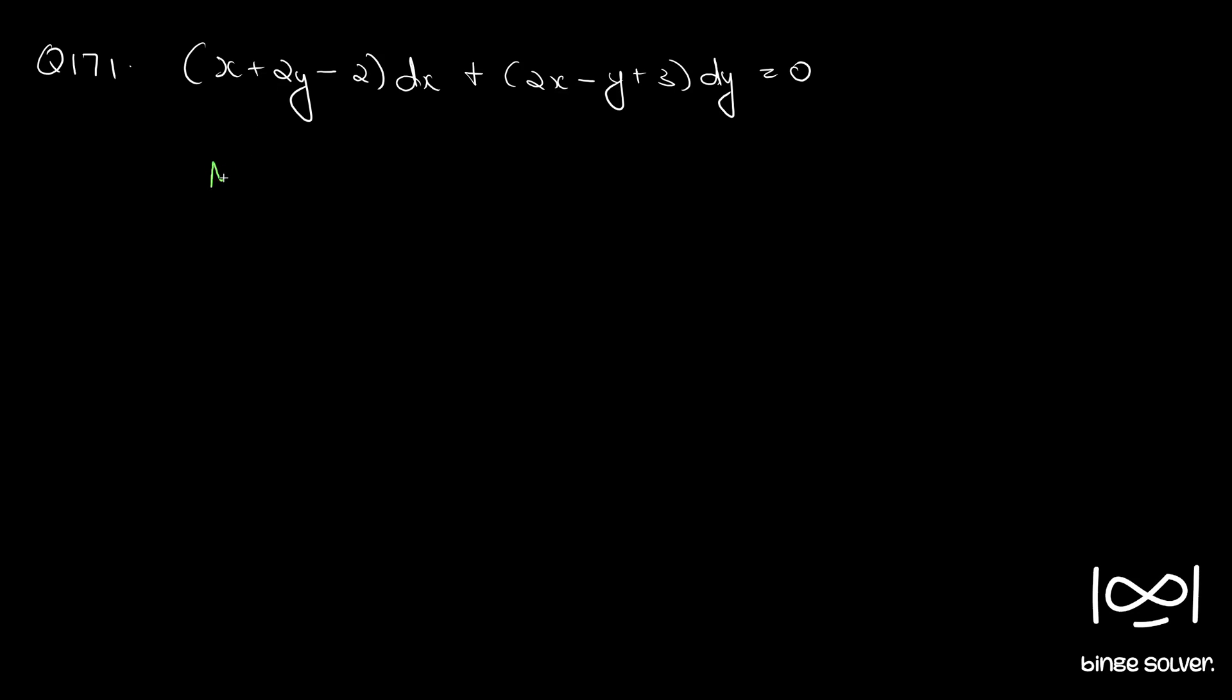Given equation is in the form m dx plus n dy equal to 0. So first we check whether the given equation is exact by using the necessary and sufficient condition which is del m by del y equal to del n by del x.